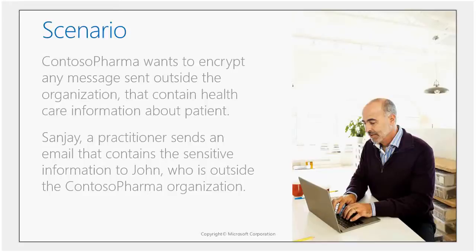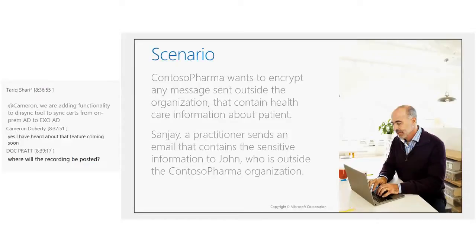The example organization is Contoso Pharma, a pharmaceutical company with two business requirements: first, detect something sensitive being sent outside the organization — in this case, a patient's medical record — and second, once that information is detected, encrypt the message so that regardless of who the recipient is, the message is protected. There are two actors: Sanjay, a practitioner at Contoso Pharma, and John, an external recipient who could be on any email service.